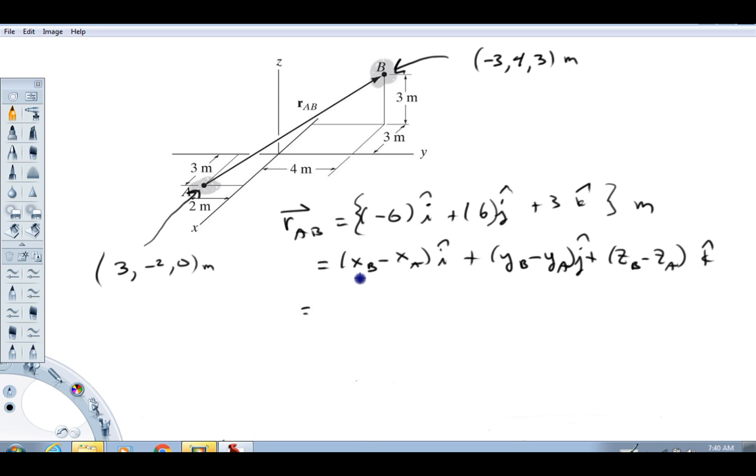I'm gonna go ahead and write it out now. So xB minus xA would be negative three minus three i. Okay, yB minus yA would be four minus a minus two j. And then zB minus zA would be three minus zero. Okay, and then we should have units on this vector. This is in meters.